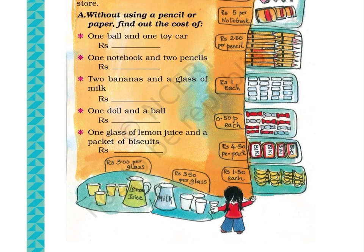Box 8 has 20 erasers, price tag Rs. 1 each. Box 9 has 12 toffees, price tag Rs. 50 paise each. Box 10 has 4 packets of biscuits, rate tag Rs. 4.50 per pack. Box 11 has 16 bananas, price Rs. 1.50 each. Box 12 has 4 glasses and a jug of milk, price tag Rs. 3.50 per glass. Box 13 has 4 glasses and a jug of lemon juice, price tag Rs. 3 per glass.